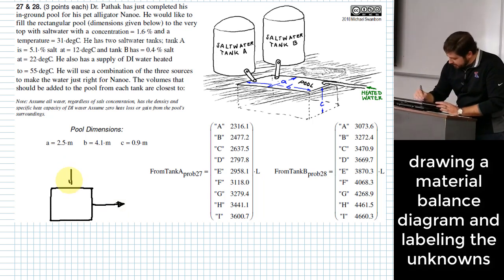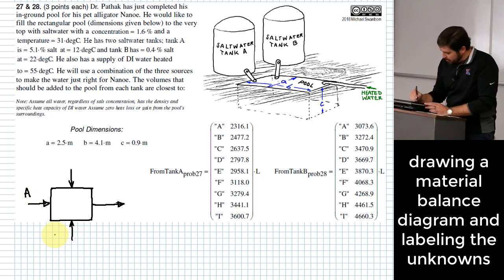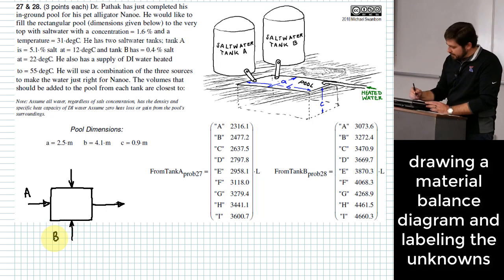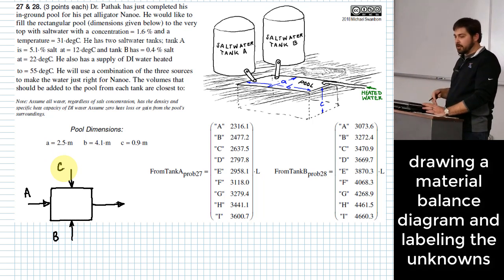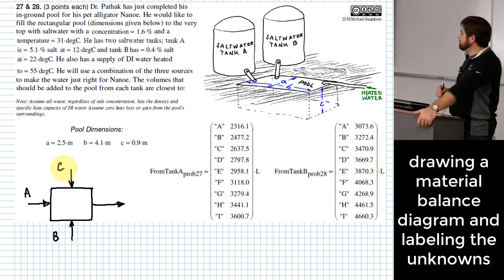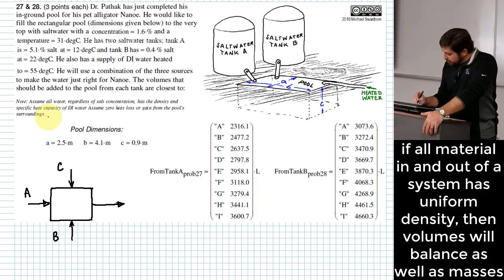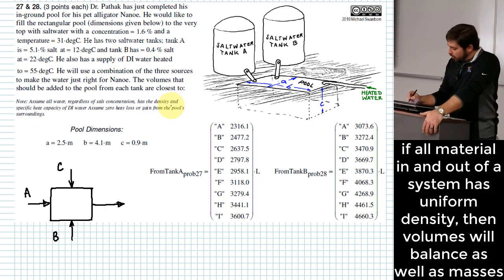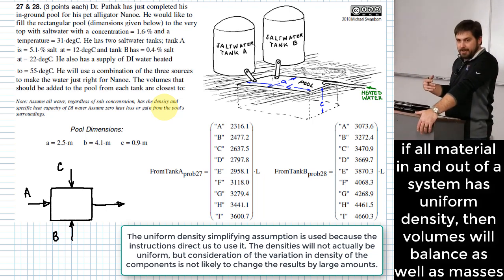Draw a picture. Very good. So we're going to draw a little picture showing the inputs into the swimming pool, and then what we'll show as an output is what is the desired content of that pool. It says we're going to assume that the density of all of the water that goes into the pool is all going to be at the same density, regardless of the salt concentration.